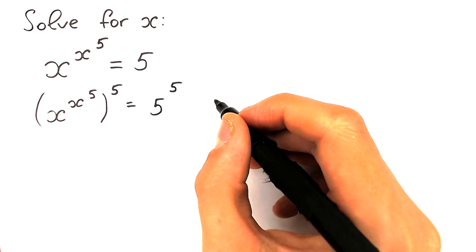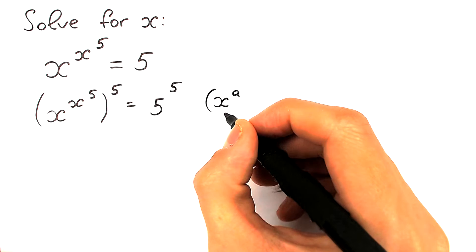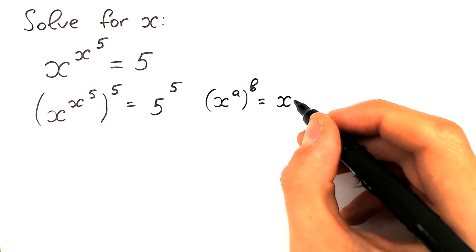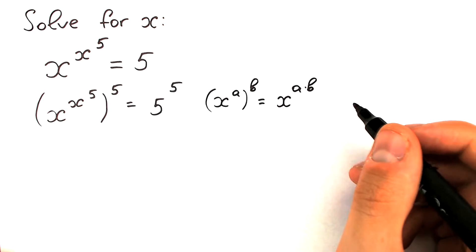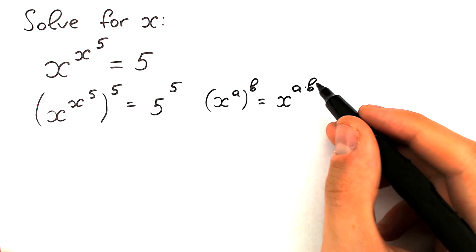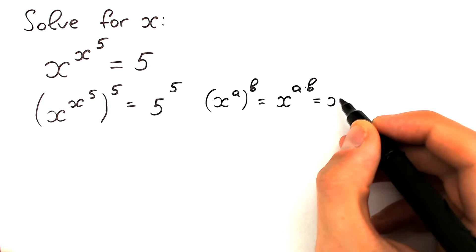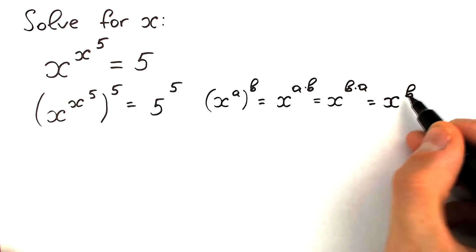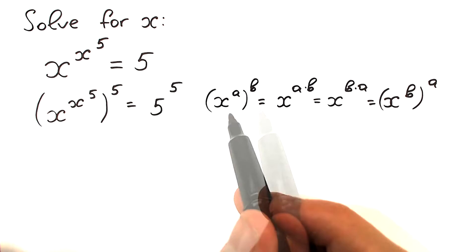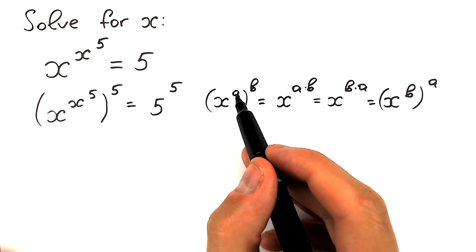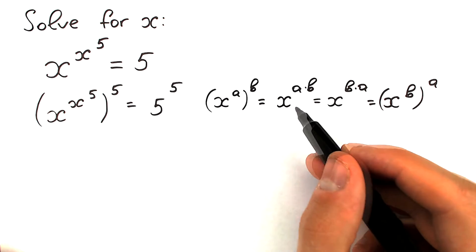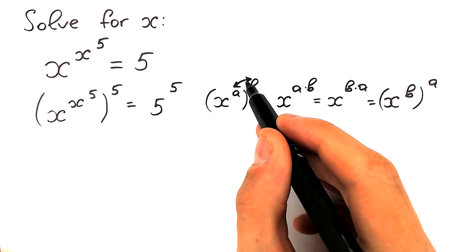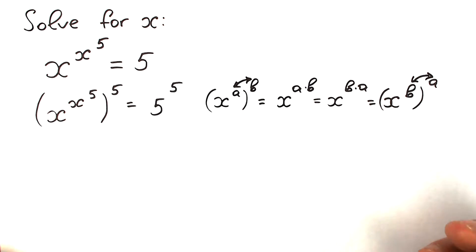Take a look closely. For example, imagine we have x to the power a, raised to the power b. We can easily write it as x to the power a times b — everyone knows about it, we can write it as a product. And because of that product we can easily swap b and a, so we can write it as x to the power b times a, and in the same way as x to the power b raised to the power a. So we can easily swap a and b in this expression.